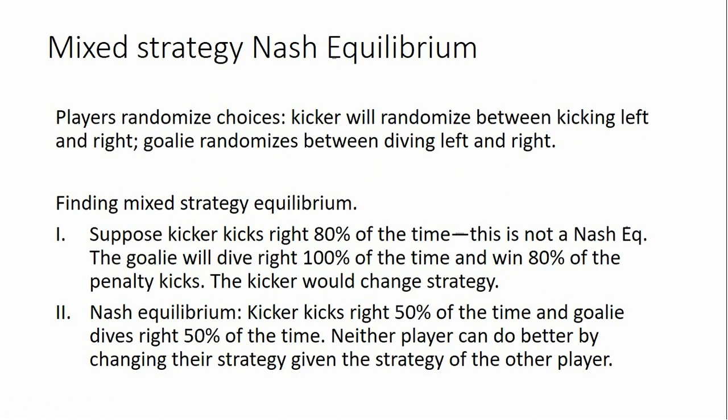So what would the Nash equilibrium be? The kicker kicks right 50% of the time and the goalie dives right 50% of the time. Neither player can do better by changing their strategy given the strategy of the other player. With 50-50, neither player can change their strategy to try to win more penalty kicks. And this is randomized — it doesn't mean the kicker alternates left-right-left in a predictable pattern. No, this is complete randomization.